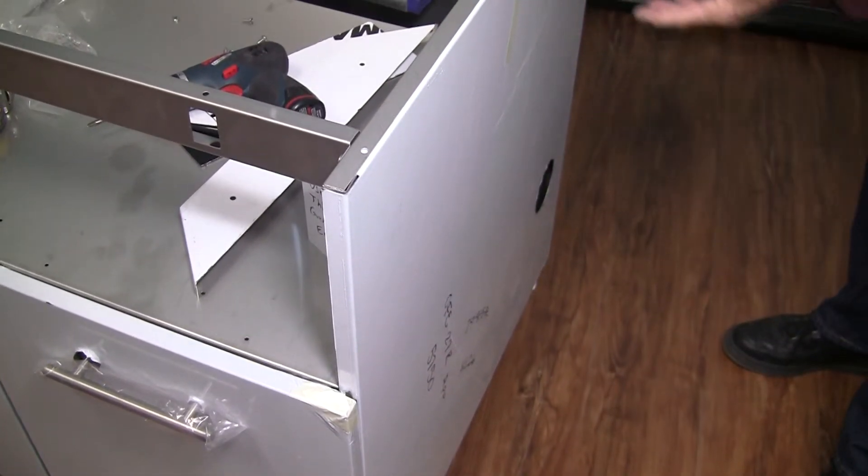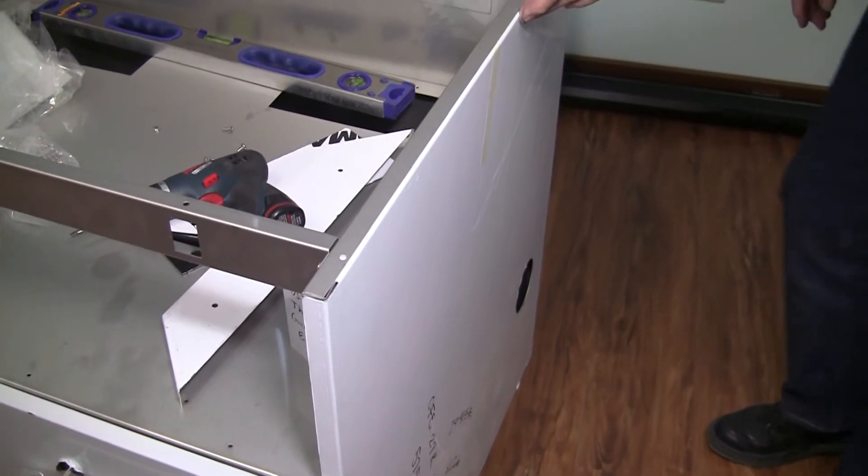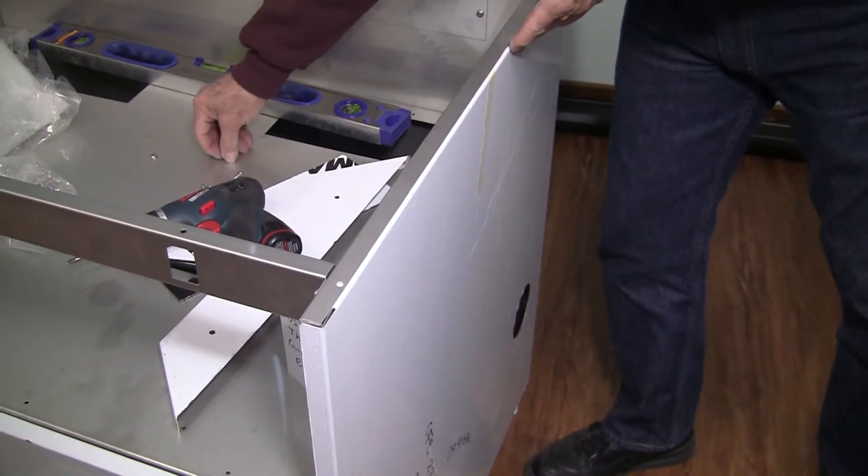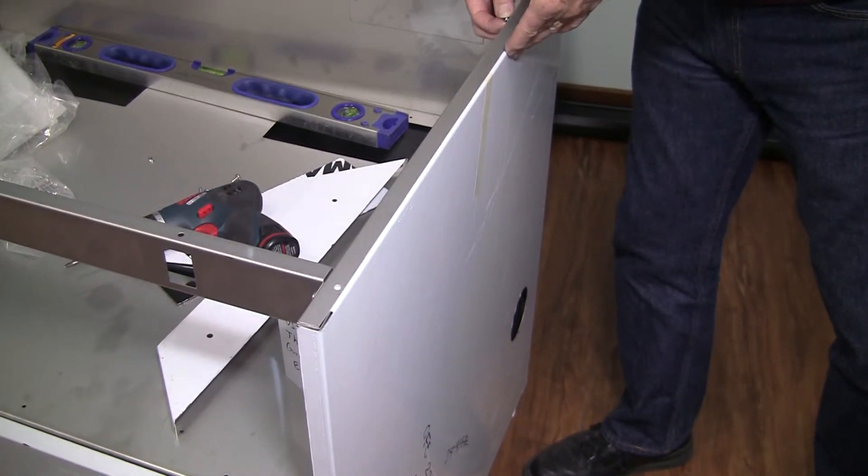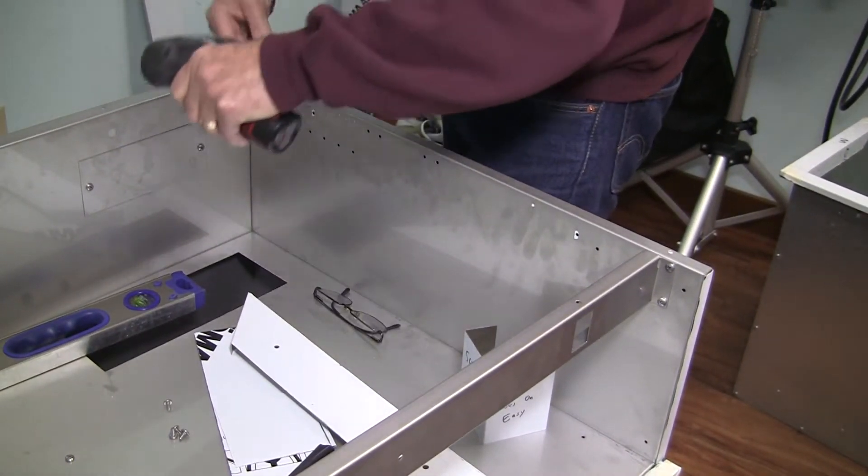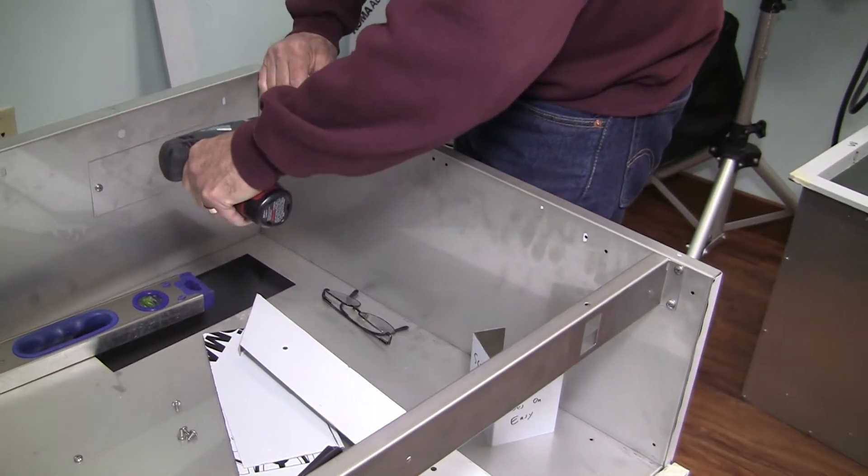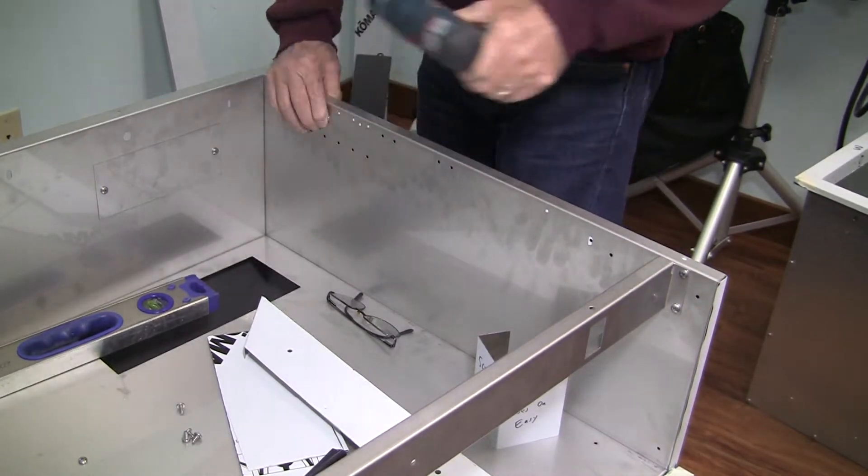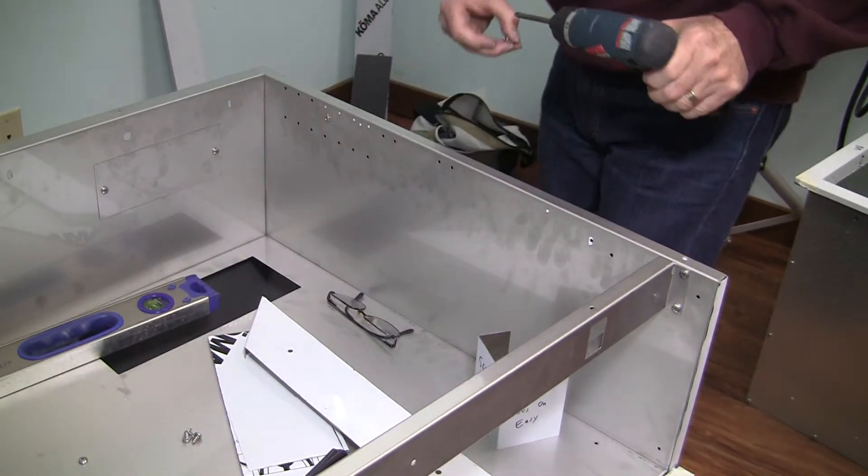And the cabinet goes inside of the side wall. Take two screws and attach the panel from the inside.